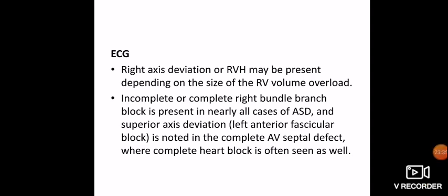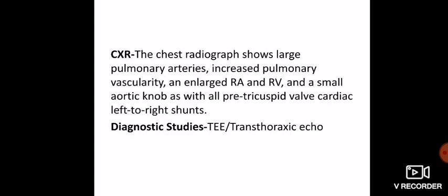On ECG, we can see right axis deviation or complete or incomplete right bundle branch block. On chest X-ray, there will be a very large pulmonary artery, increased pulmonary vascularity, enlargement of the right atrium and right ventricle, and a small aortic knob may be present.